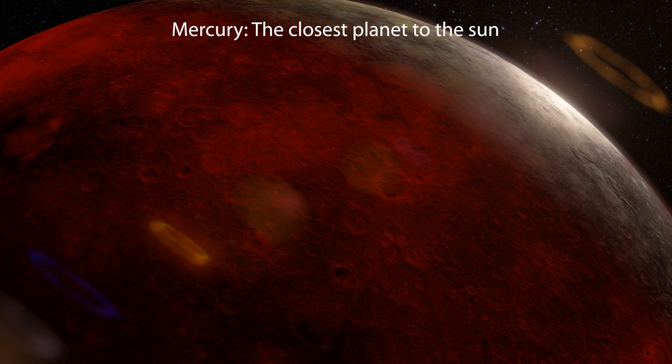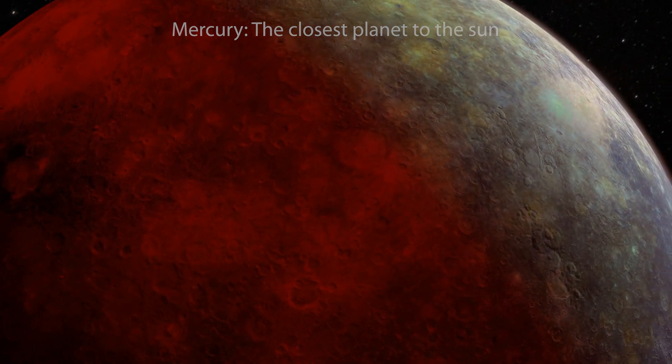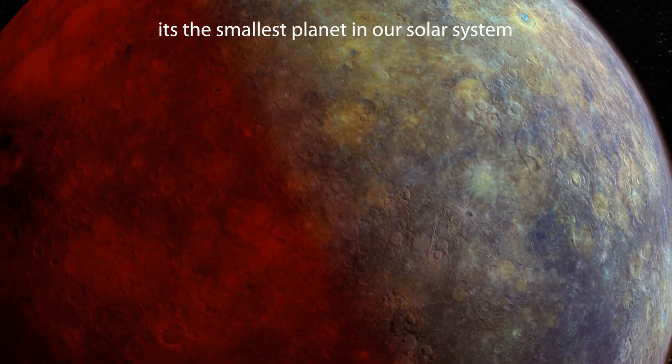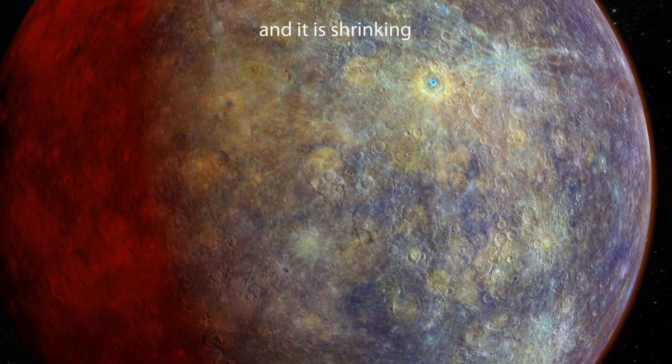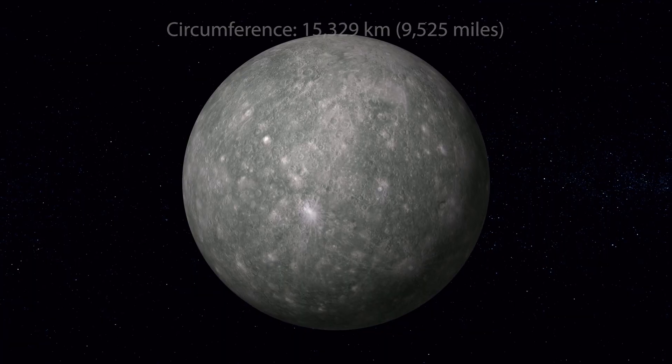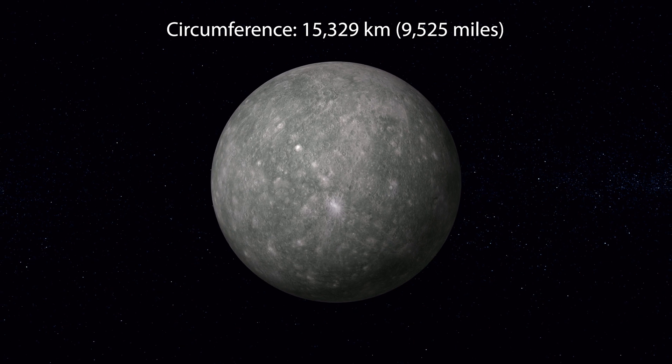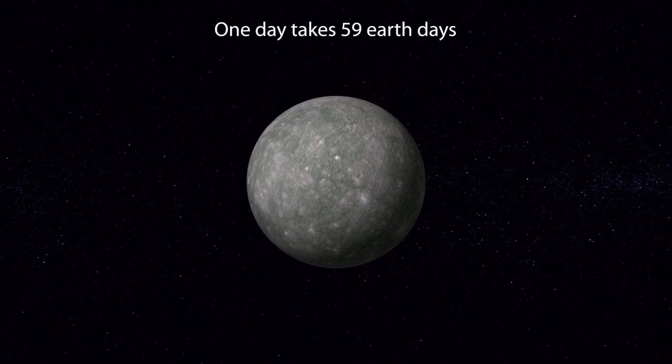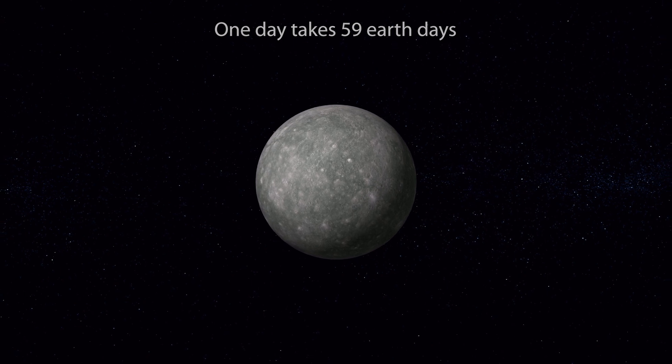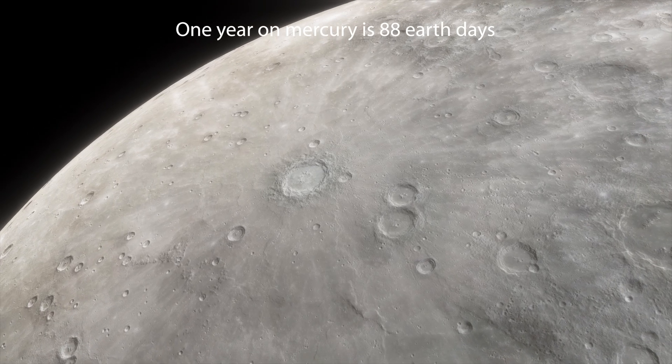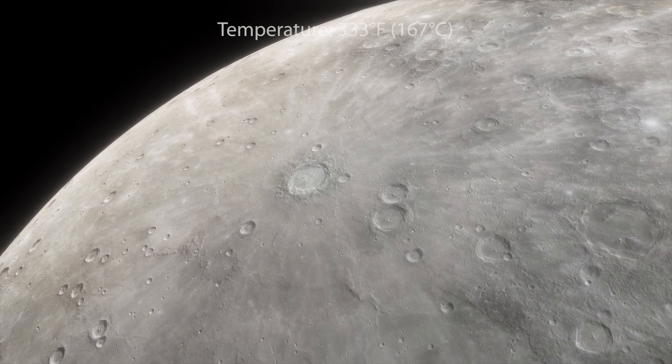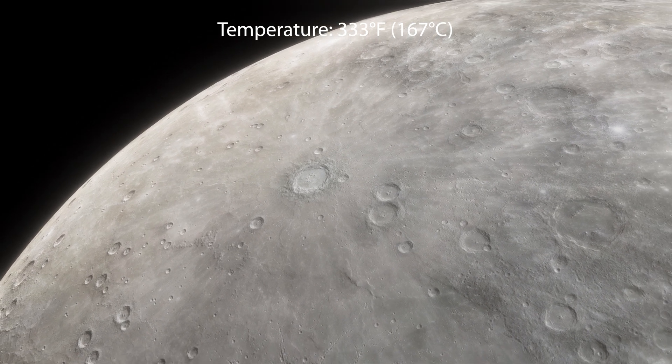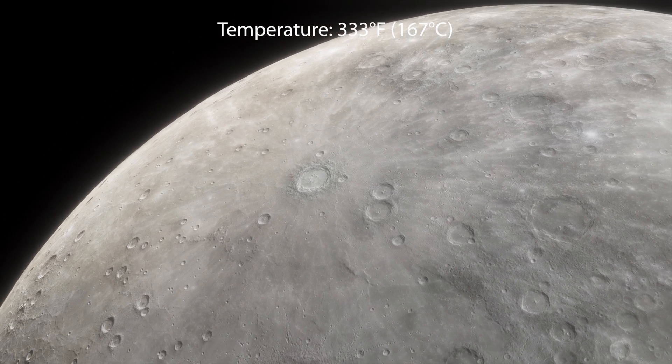Mercury, the closest planet to the sun. It is the smallest planet in our solar system and it is shrinking. The circumference of Mercury is 9,525 miles. One day takes 59 Earth days. One year on Mercury is 88 Earth days. The average temperature on Mercury is 167 degrees Celsius.